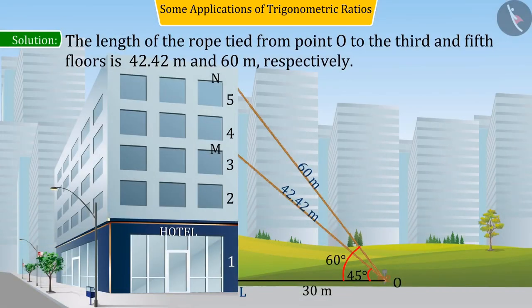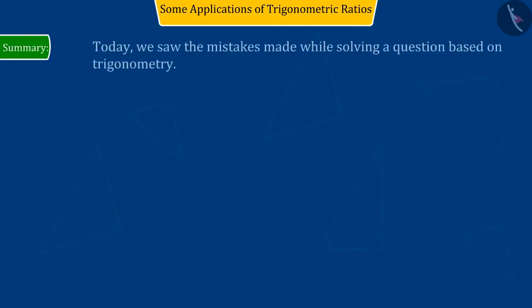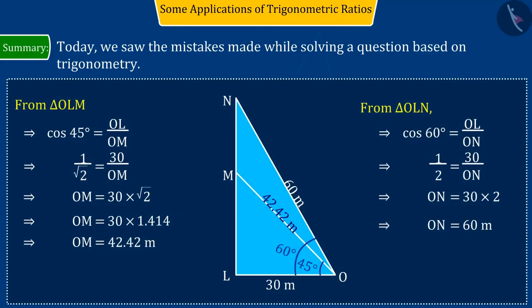Therefore, we can say that the length of the rope from the third and the fifth floor of the building from point O was found by Tarun to be approximately 42.42 meters and 60 meters respectively, which is absolutely correct. So today, we saw the mistakes made while solving a question based on trigonometry.